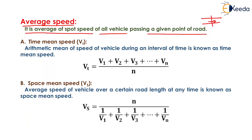The first type of average speed is Time Mean Speed, denoted by Vt. The arithmetic mean of the speeds of vehicles during an interval of time is known as Time Mean Speed. It is determined by adding all the spot speeds and dividing by the number of vehicles passing through that cross section of the road.